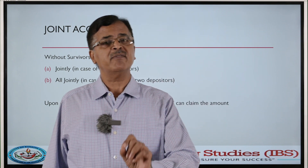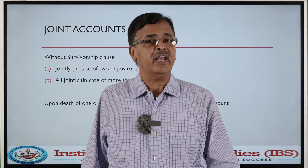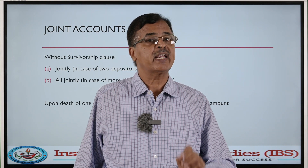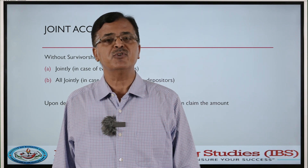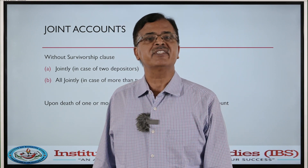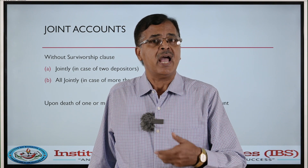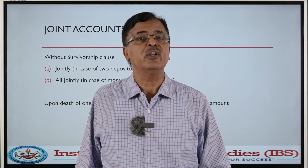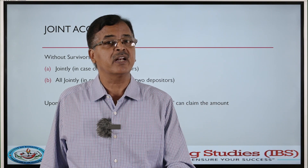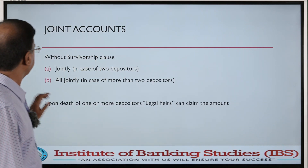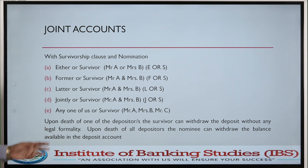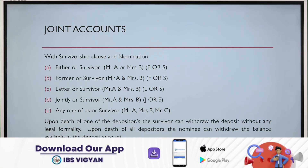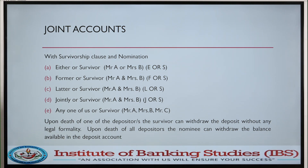Let us examine how the nomination facility is connected with the survivorship clause. Suppose in a survivorship clause account, nomination facility is added — then remember, the nominee will come into the picture for claiming the amount only after the death of all joint depositors. For example, A and B opened a deposit account as either or survivor and nominated Mr. C. If something happens to A, B as the survivor can claim the amount — there is no prominence for the nominee Mr. C at that stage. Mr. C can claim only after the death of both A and B. Upon death of one depositor, the survivor can withdraw without any legal formality; upon death of all depositors, the nominee can withdraw the balance.